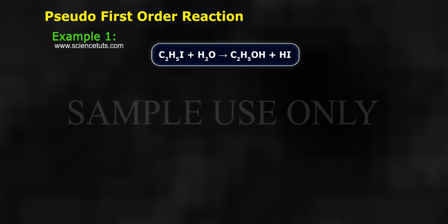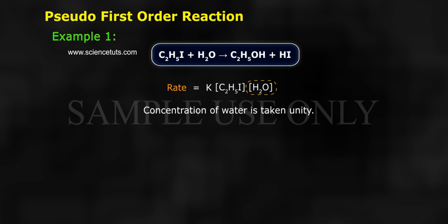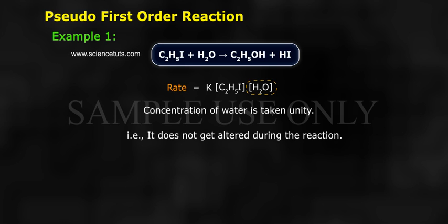Example 1: Ethyl iodide plus water gives ethyl alcohol and hydrogen iodide. Rate equals K times ethyl iodide concentration times water concentration. Concentration of water is taken as unity, that is, it does not get altered during the reaction.